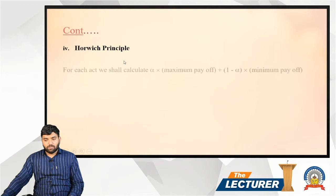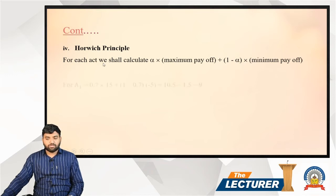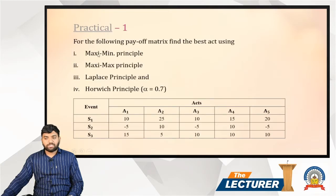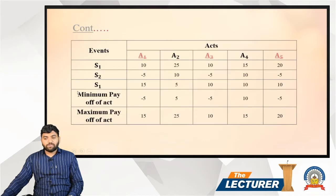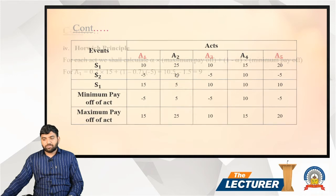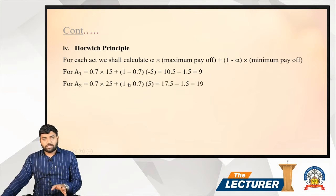For the Hurwicz principle, we calculate: alpha × maximum payoff + (1 − alpha) × minimum payoff. The alpha given in the question is 0.7. For a1: maximum payoff is 15, minimum is minus 5. So: 0.7 × 15 + (1 − 0.7) × (−5) = 10.5 − 1.5 = 9.